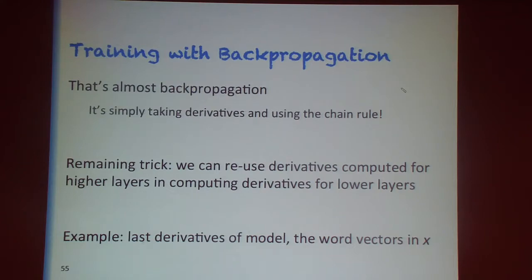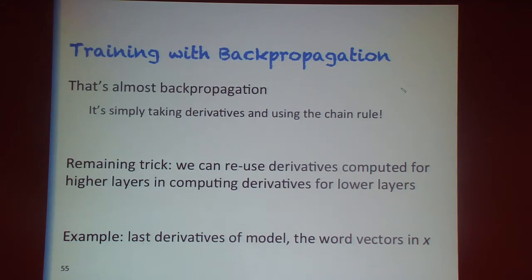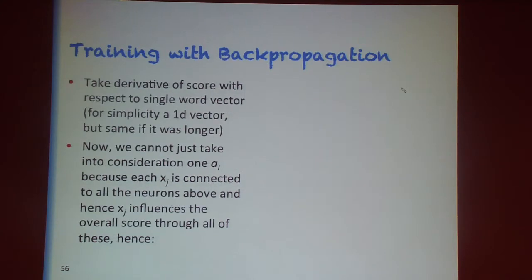There's one final trick to producing efficient backpropagation algorithms: reusing partial computations. We can reuse quantities calculated for derivatives of higher layers in lower layers. An interesting part of these models is that as well as changing the W weights, we can also backpropagate errors into the word representations and update them — which is precisely how we learn these unsupervised word representations.